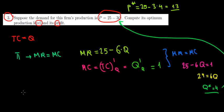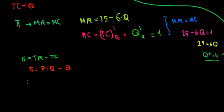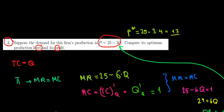Now we calculate profit, which is total revenue minus total cost. Total revenue equals price times quantity: TR = P × Q. Total cost equals Q, so TC = Q. Substituting our values: π = 13(4) - 4 = 52 - 4 = 48. The firm's profit is 48, and we are done.